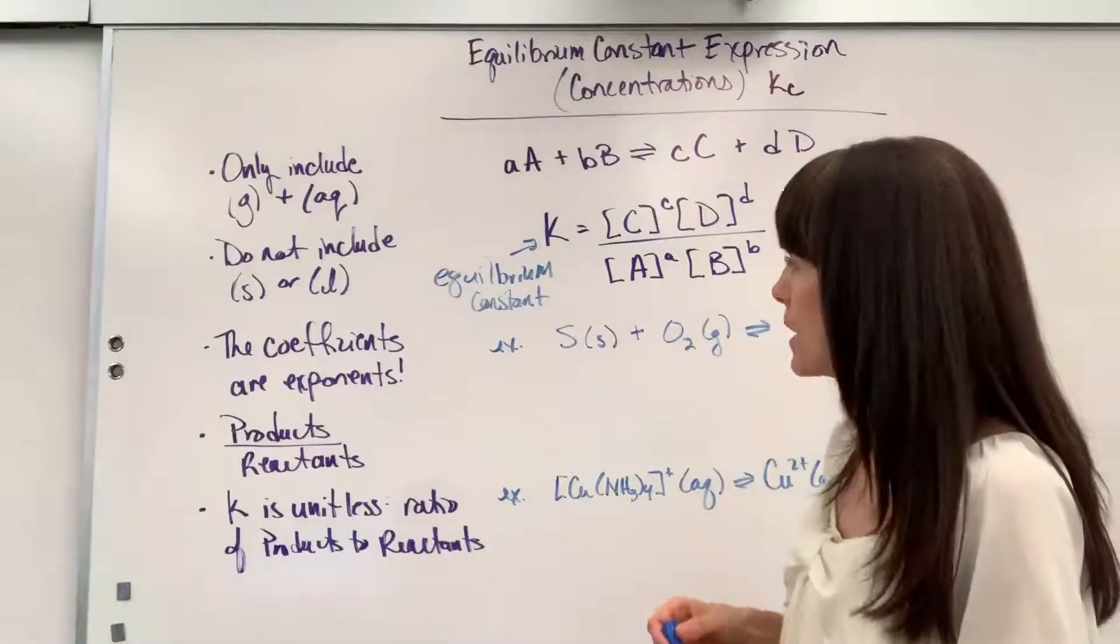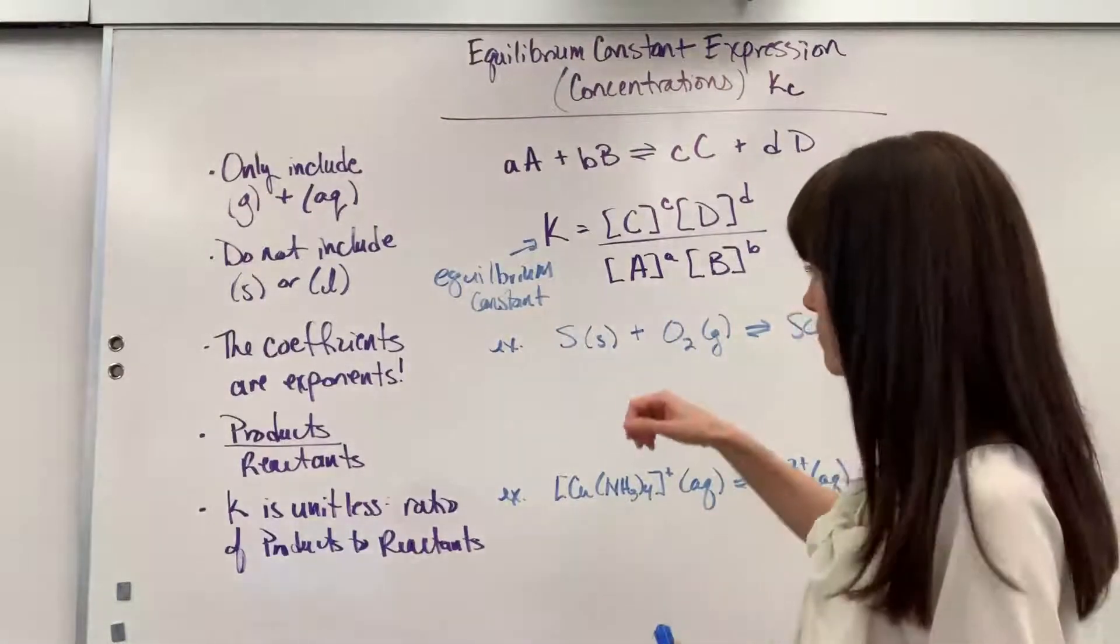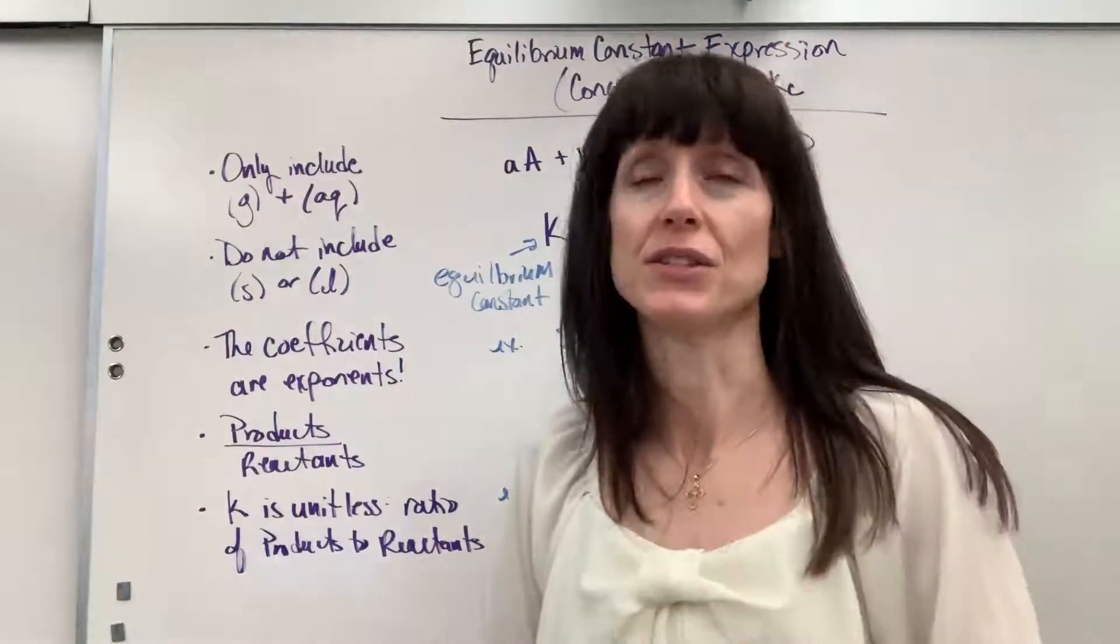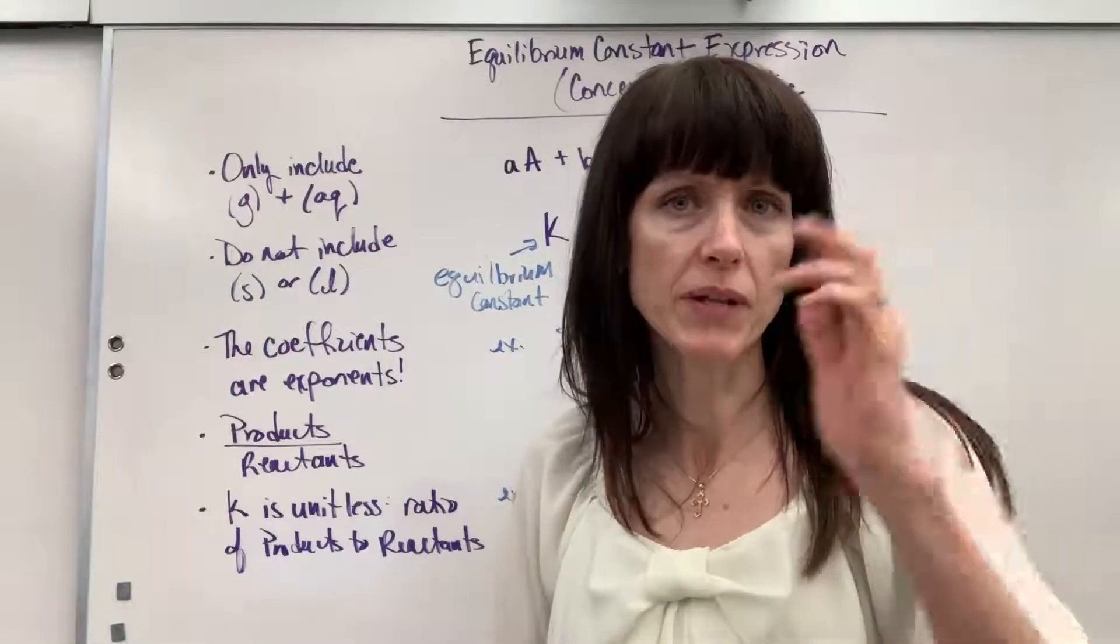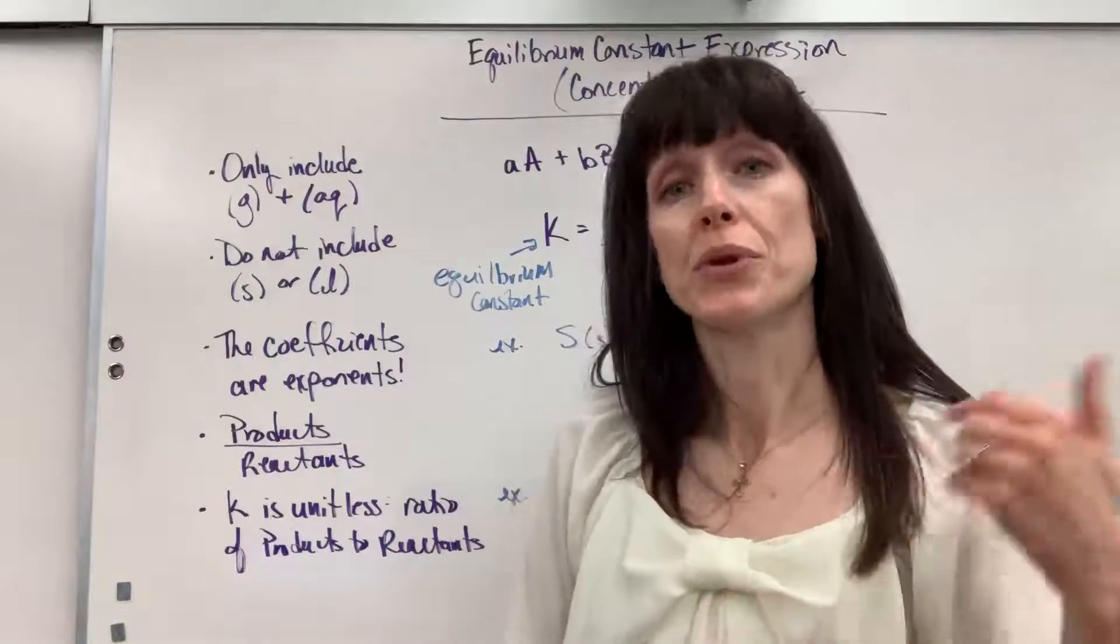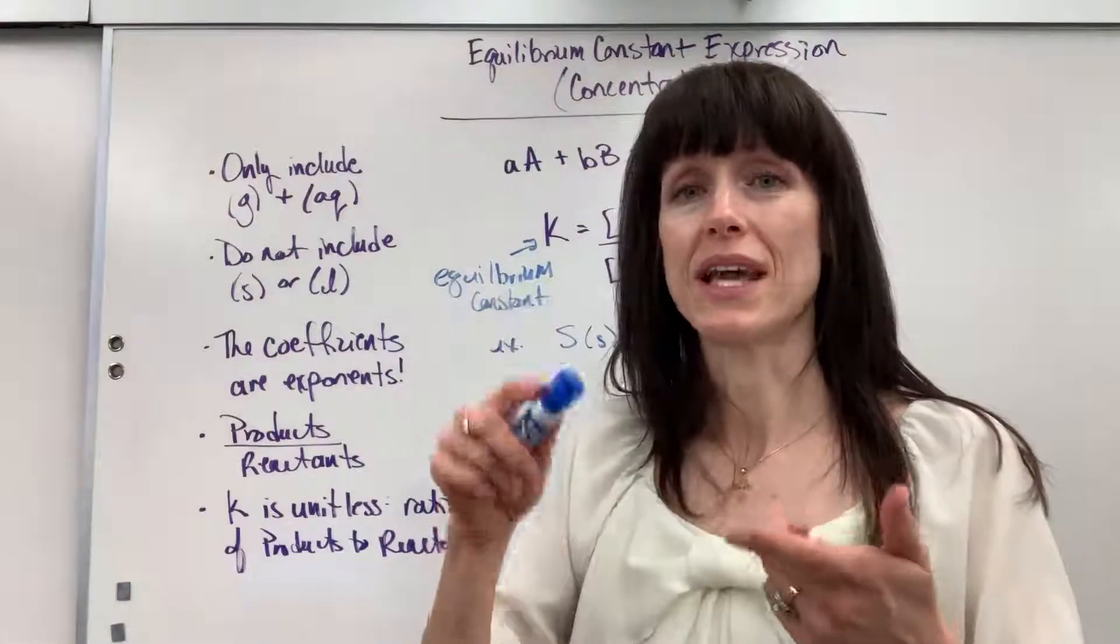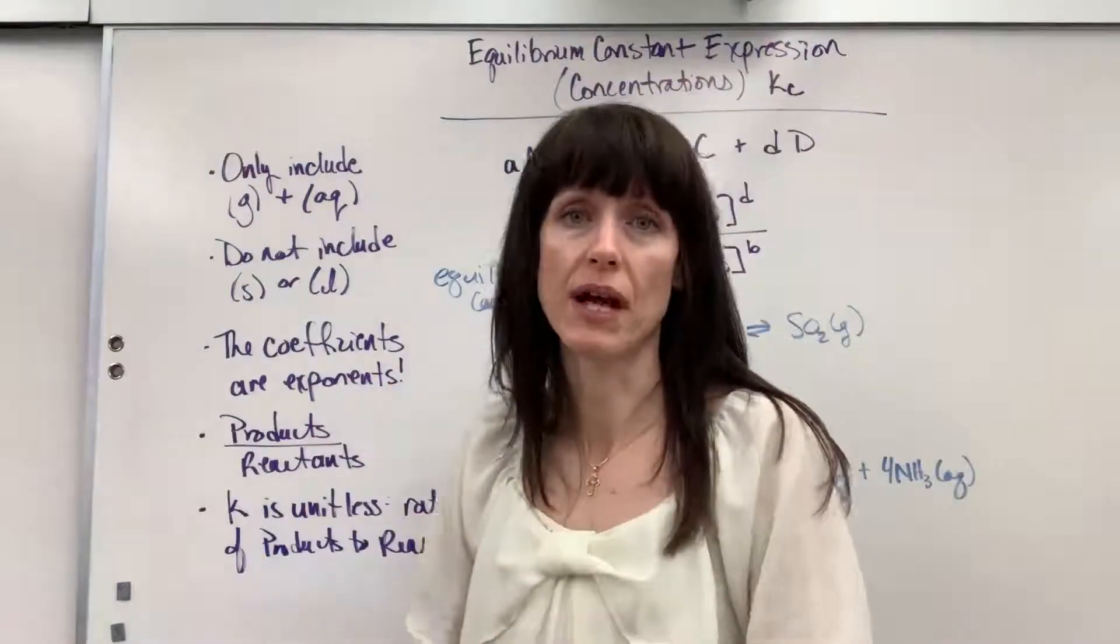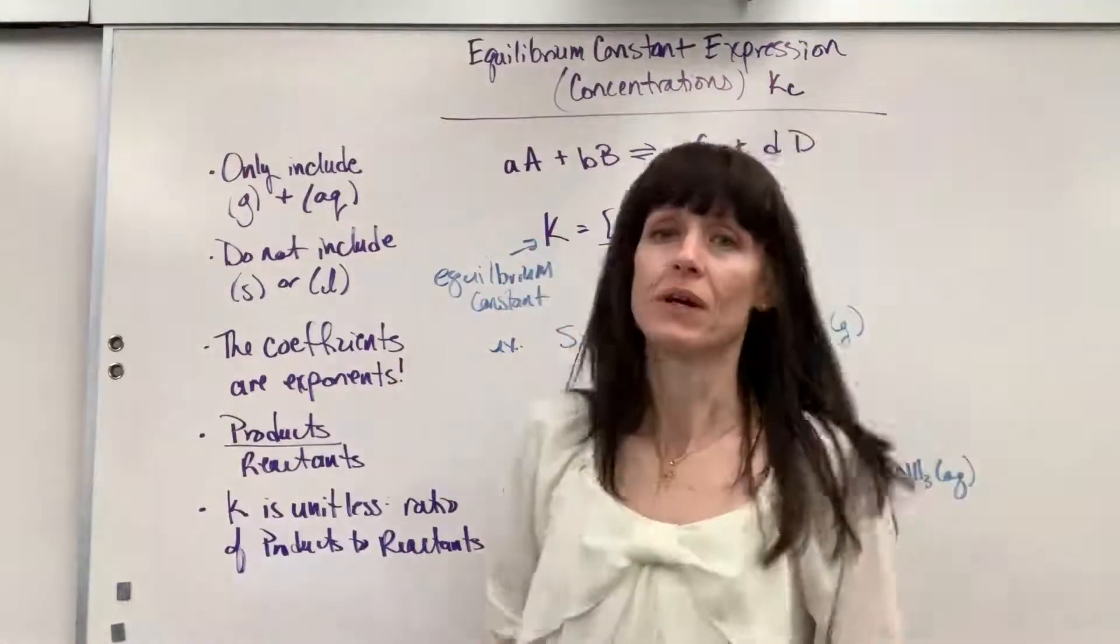The other difference that I want you to remember is that when we're doing k, the equilibrium expression, it's always products over reactants. You're going to hear that a ton. Products over reactants, products over reactants. When you do the rate law, it was rate equals k times the concentration of reactants. The rate depends only on reactants. This is different.